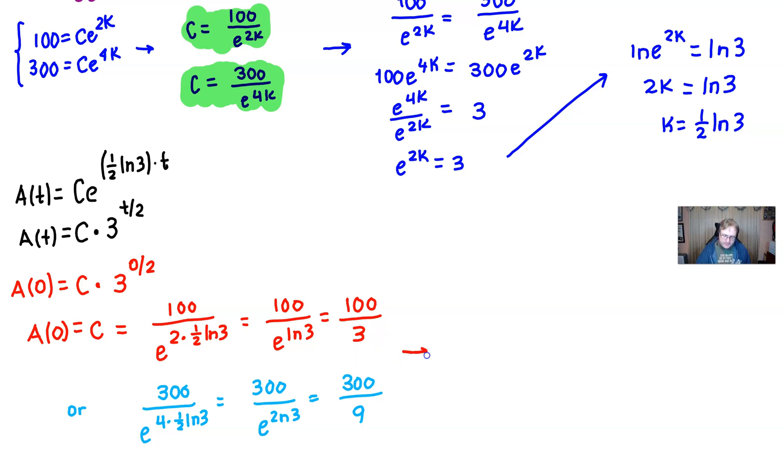And furthermore, if you have to round this to the nearest fruit fly, this is really 33.3 repeating flies, which rounded would, I suppose, be 33 flies.